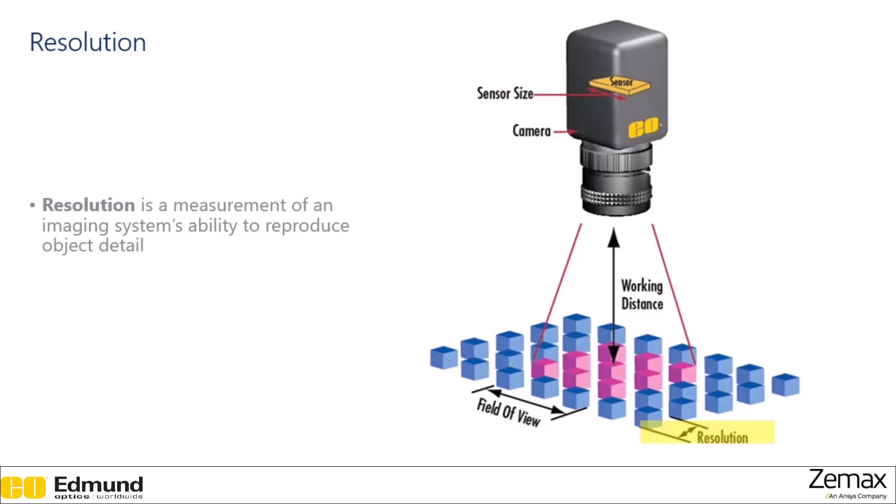Next up, resolution, is a measurement of an imaging system's ability to reproduce the details on an object. The type of resolution you can get is influenced by a number of factors from the lighting used, from the pixel size on the sensor, and the capabilities of the object. So depending on the qualities of each of these things, a different thing may be limiting the resolution you're able to get in your system.